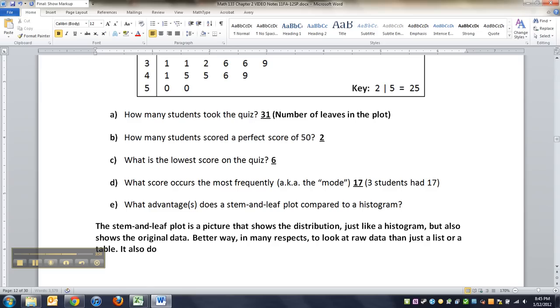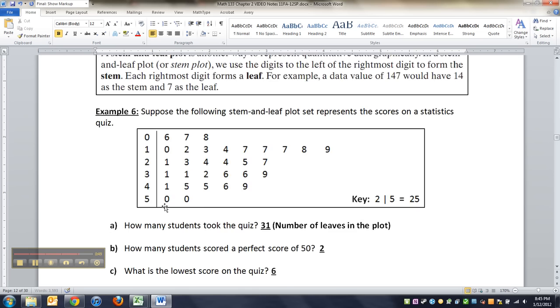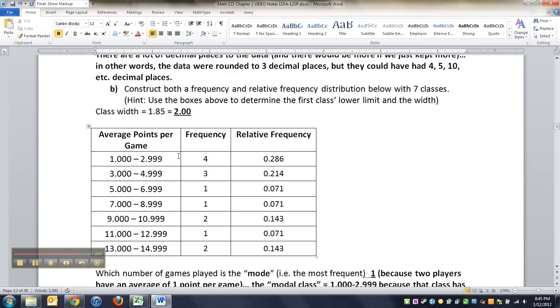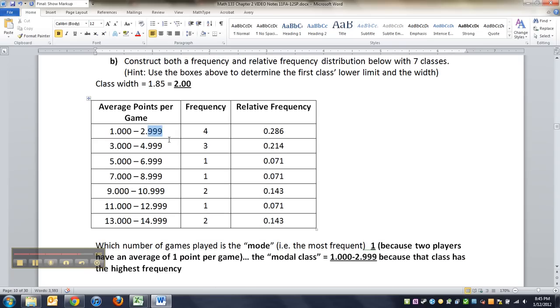It also doesn't have the arbitrary class widths that a histogram or table has. For example, when you look up to the one we made, who decided that there were going to be seven classes and how wide they needed to be and all that. If you just look at this table, how many people actually had 3.5 in there? You don't know.